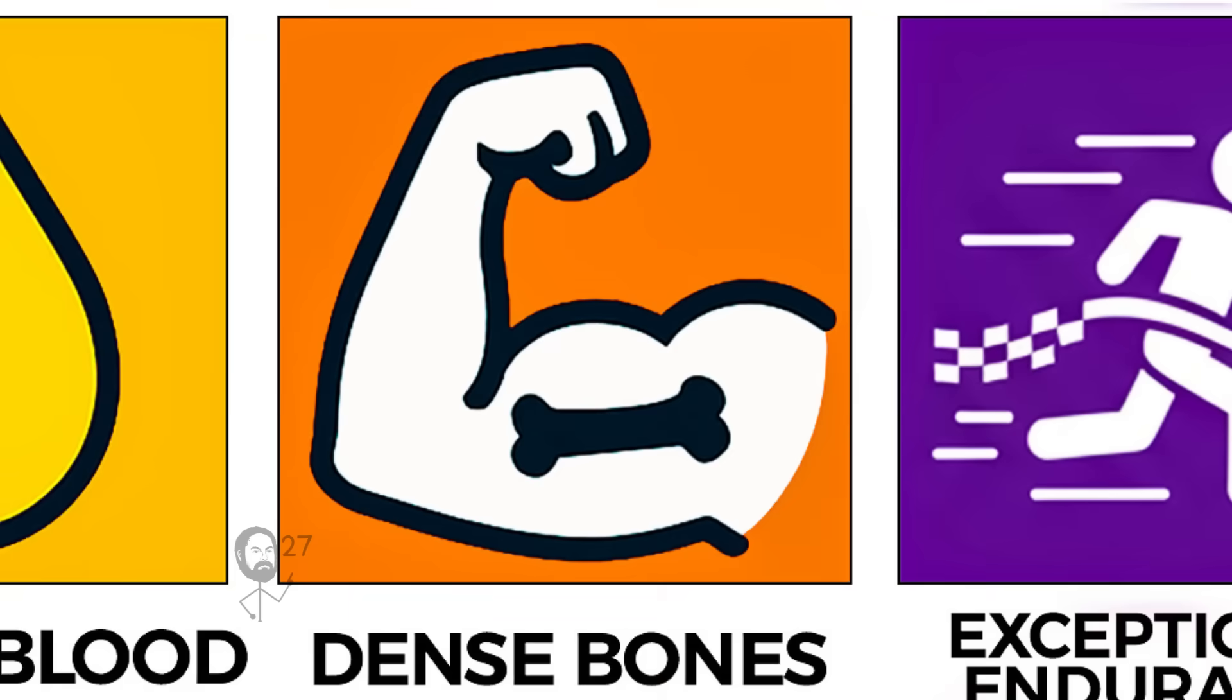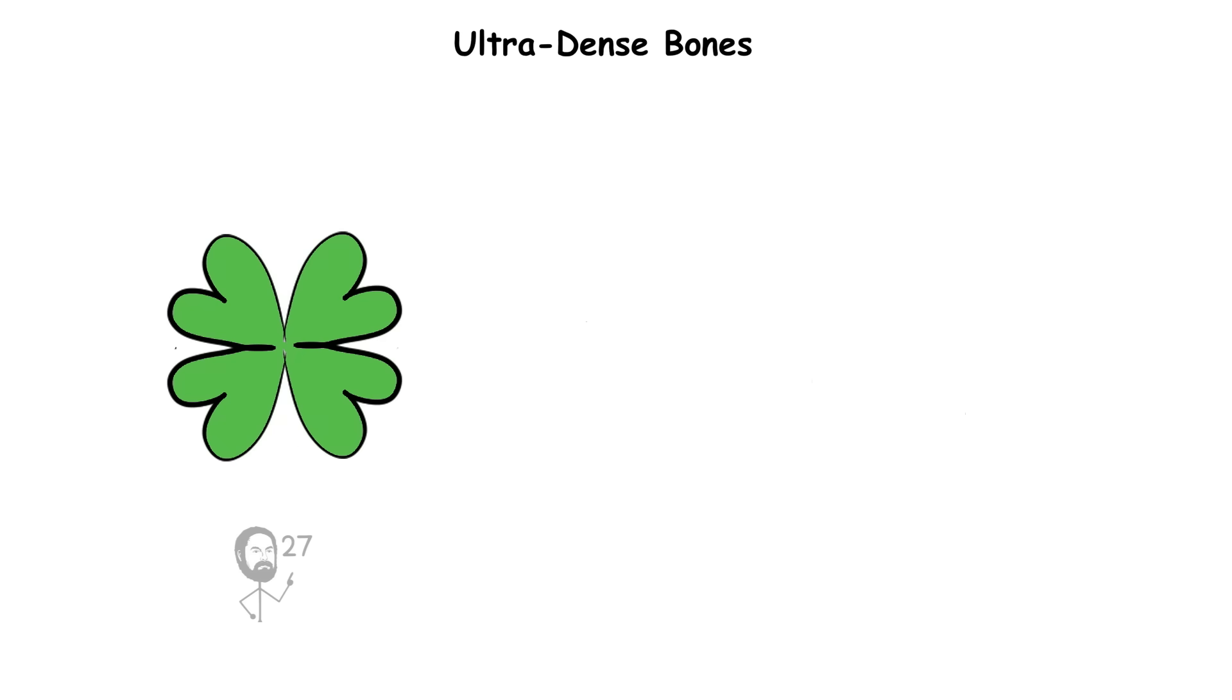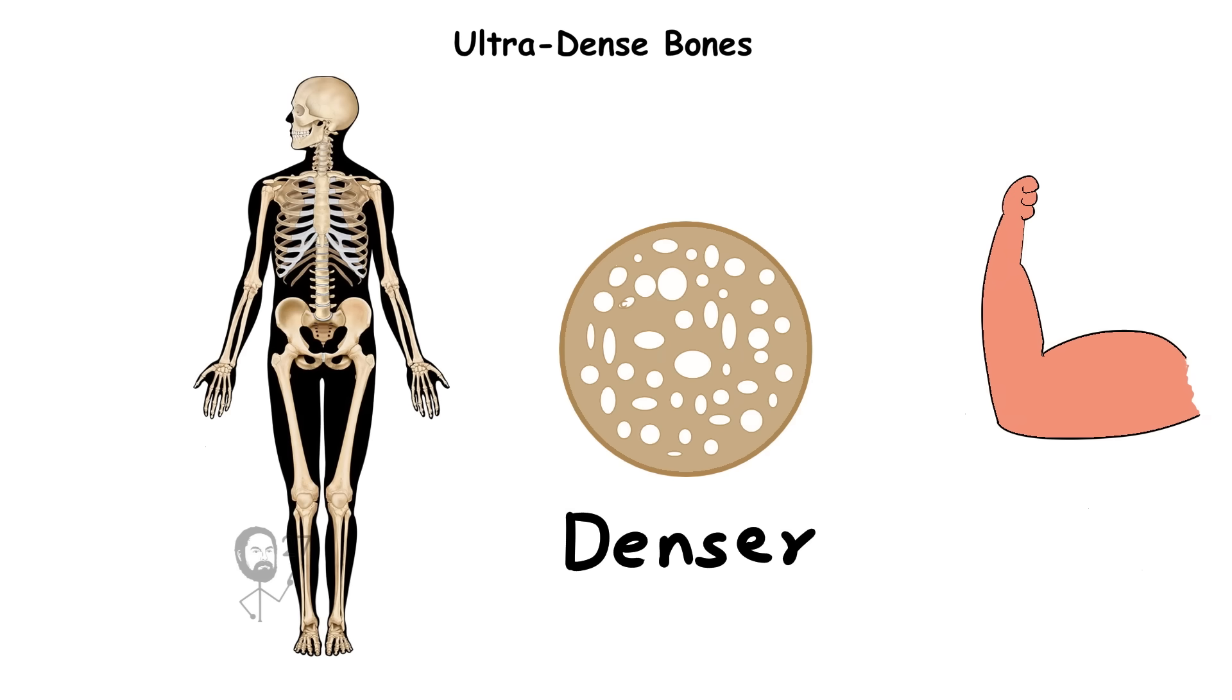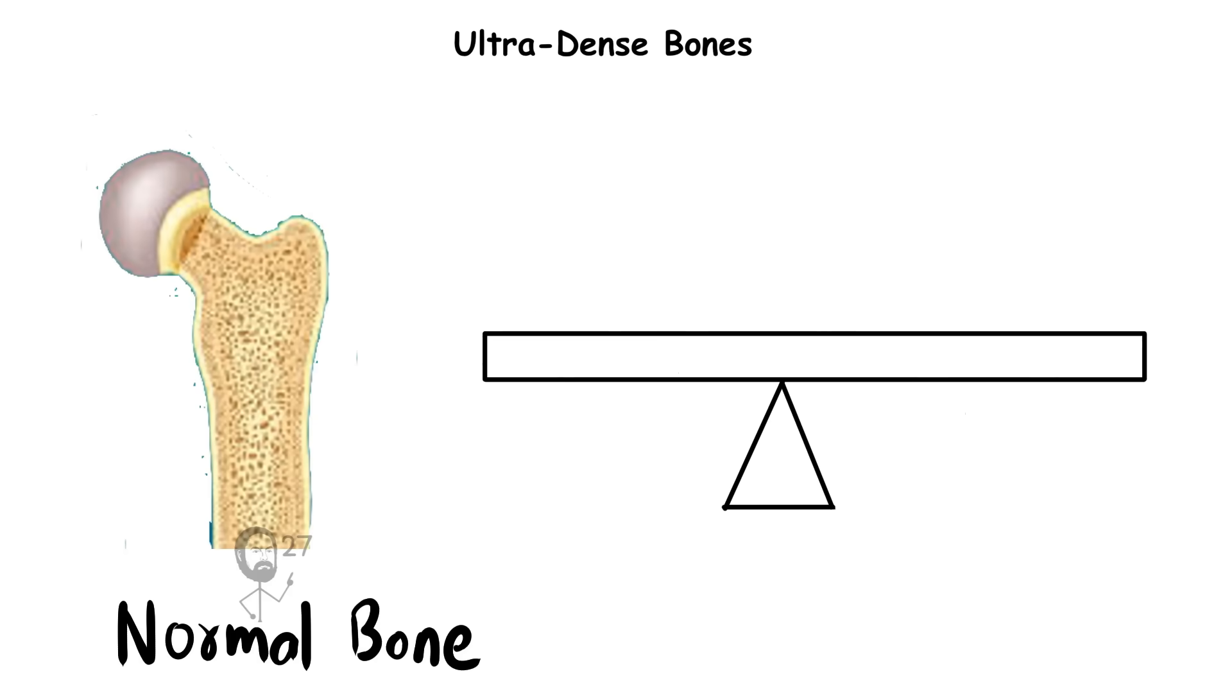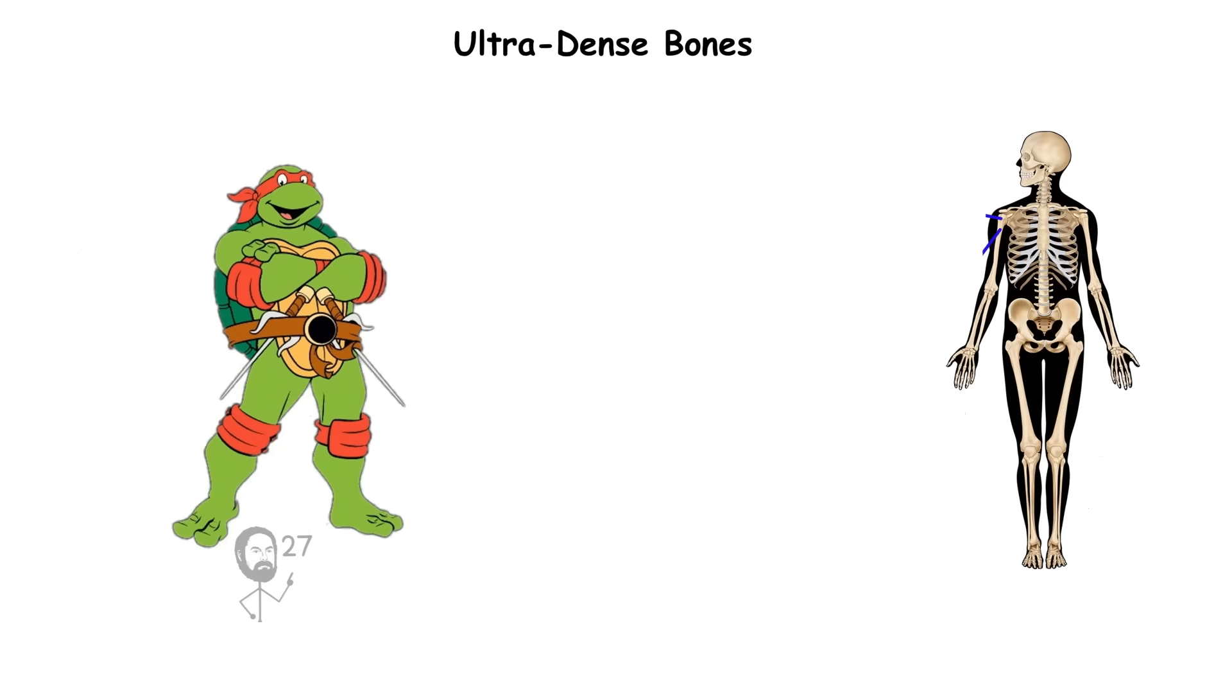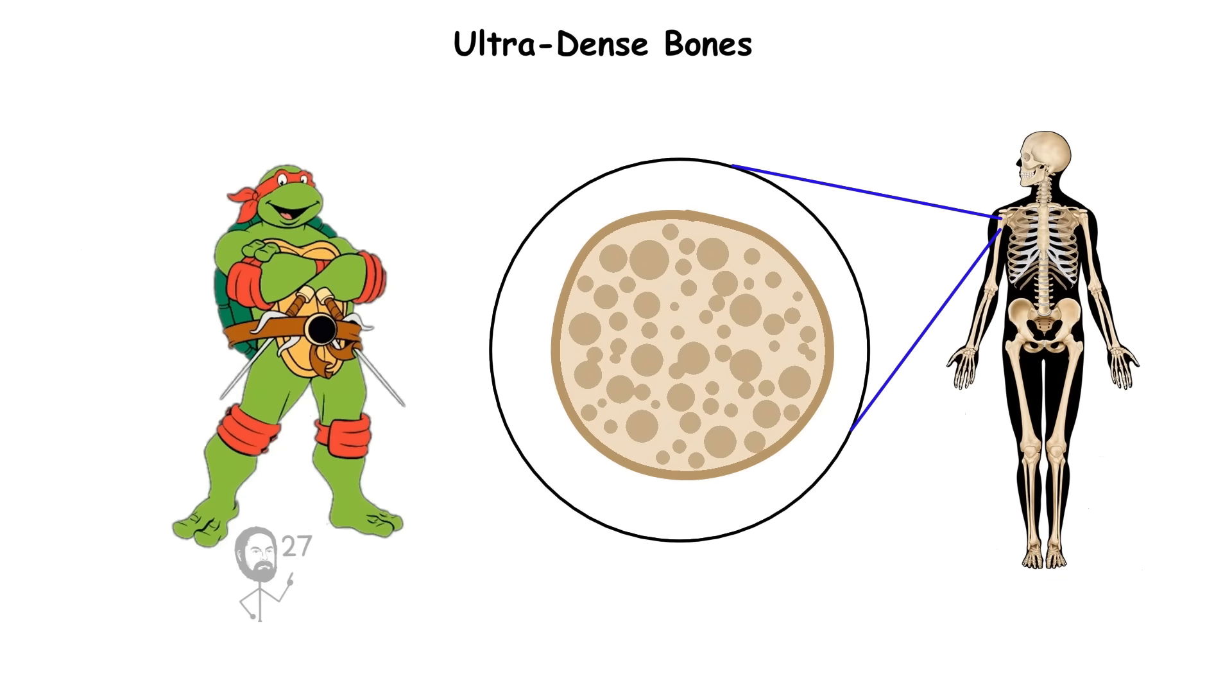Ultra-dense Bones. LRP5 mutation. A rare change in the LRP5 gene can make a person's bones far denser and stronger than the human norm. Bone tissue is usually a balance of hardness and flexibility, but in people with this mutation, the material inside their skeleton becomes unusually compact.